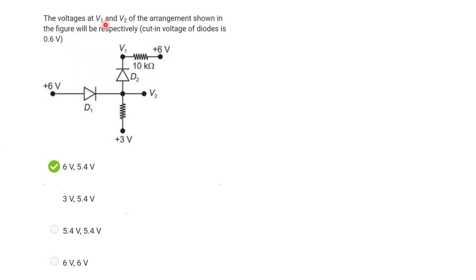The voltages at V1 and V2 of the arrangement shown in the figure will be respectively. The cut-in voltage of the diode is 0.6V.